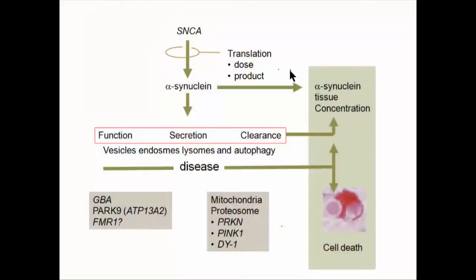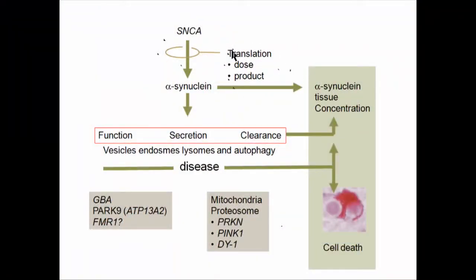It's not necessarily all about translation, which can produce dose and product. There's increasingly evidence that other PARK genes and those related to increased risk of disease are going to alter both the function, secretion, and clearance of alpha-synuclein, and may also have effects on endosome and exosome trafficking as well as the autophagy and ubiquitination of alpha-synuclein. So there are many sites at which expression could be altered other than simply at translation.